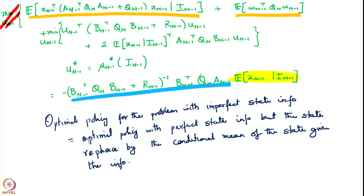The optimal policy with perfect state information is in fact equal to the optimal policy with imperfect state information — the only thing you need to do is apply the same matrix transformation. When you have imperfect state information, you multiply that matrix by the conditional expectation of the state; whereas with perfect state information, you multiply it by the state itself, which is already known to you.